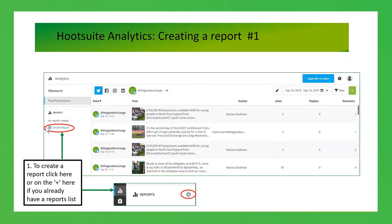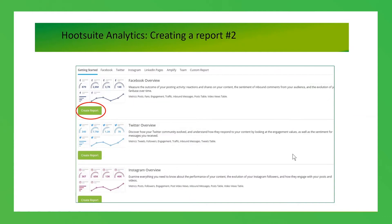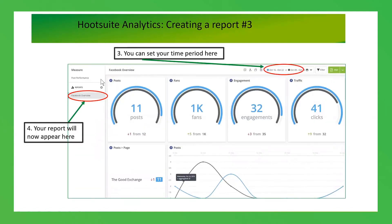To create your own report, click on the plus. If you already have a reports list it will show you the plus; if you haven't created any reports it says 'no reports created' and you click there. You'll be taken to create a report where you've got your four platform options and a custom report option. For example, to create a Facebook overview report, just click the green 'create report' button underneath Facebook overview.